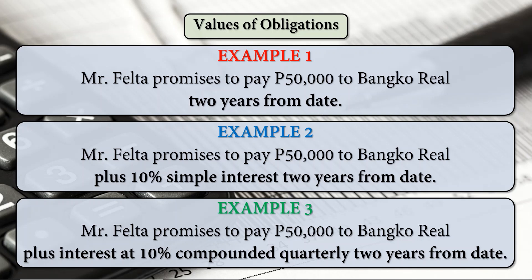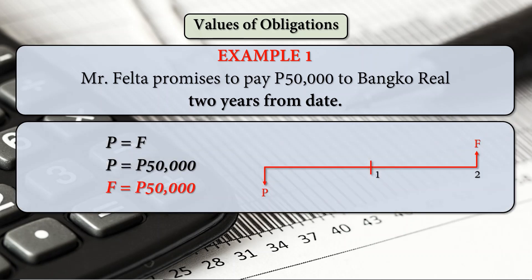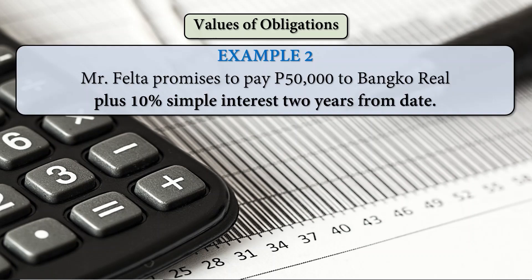They differ in interest type and of course in future amount. For the first example, since there is no interest, our present value equals the amount. So if our present value is 50,000, our future amount is also 50,000. Using a cash flow diagram, the present value equals the future value after two years.